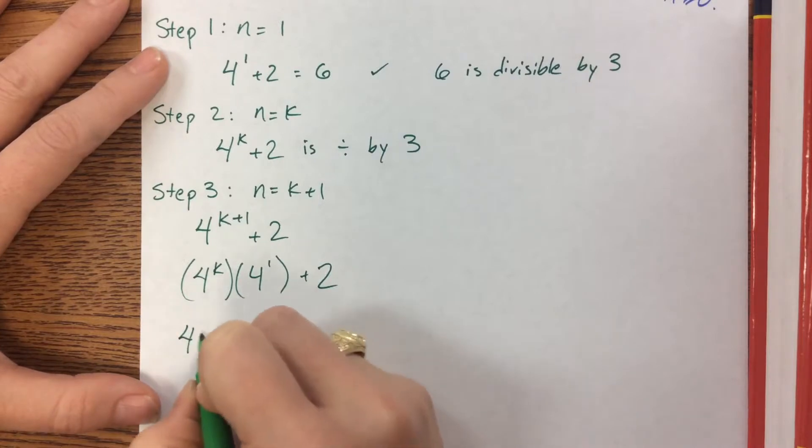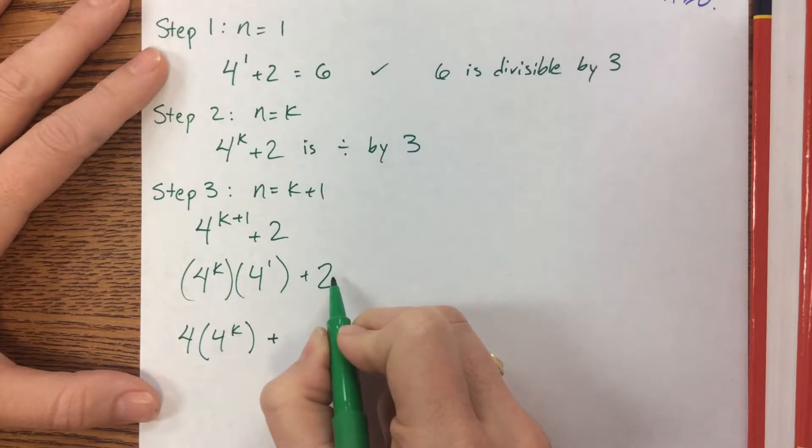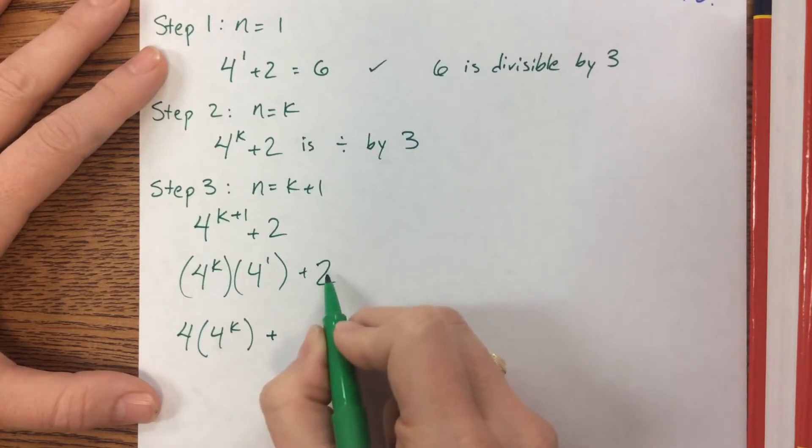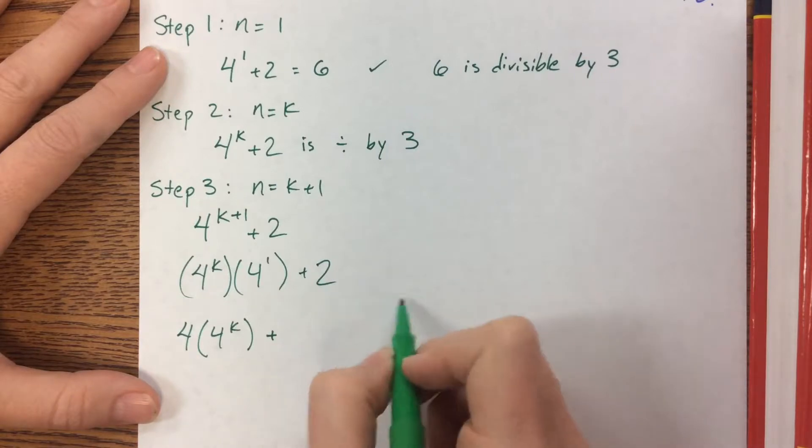So if I say 4 to the 4k, that's just rewriting that. Plus well if I want to factor out that I need to turn this into 8. That way I could say that this is 4 times 2 and factor out the 4.